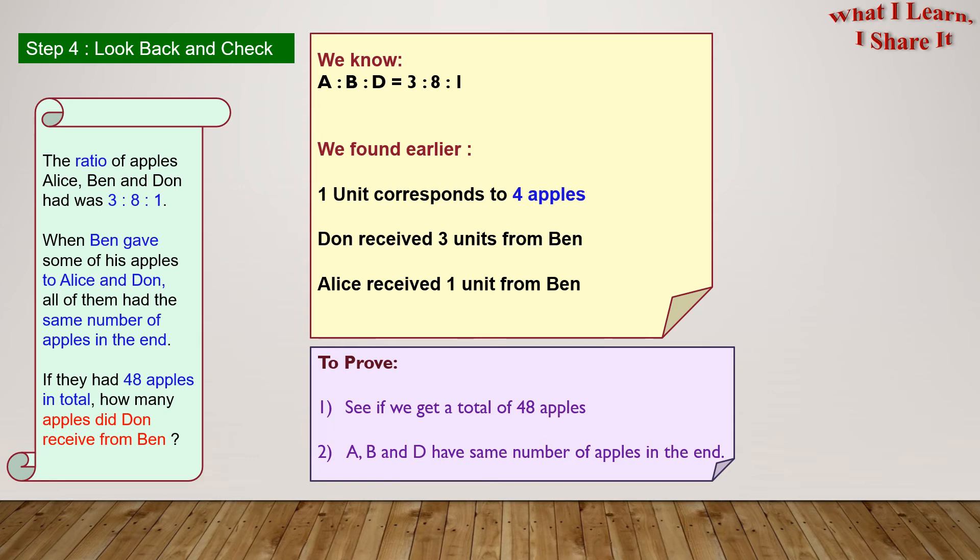Step four, look back and check. In order to check whether our answer is right or not, we will start with the information A is to B is to D equals to 3 is to 8 is to 1. We will also use other information that we found earlier, like 1 unit corresponds to 4 apples. Don received 3 units from Ben and Alice received 1 units from Ben. We will try to prove number 1 if we get a total of 48 apples and number 2 if all of them have the same number of apples in the end. If we are able to prove these two things, this will mean our answer is correct.